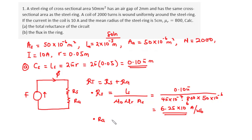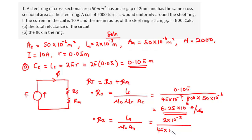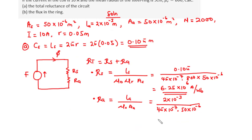Next, let's find RA. The reluctance of the air gap is given by LA divided by μ₀ × AA. So RA = (2 × 10⁻³) / (4π × 10⁻⁷ × 50 × 10⁻⁶). Simplifying, we get 31.831 × 10⁶ amperes per Weber.